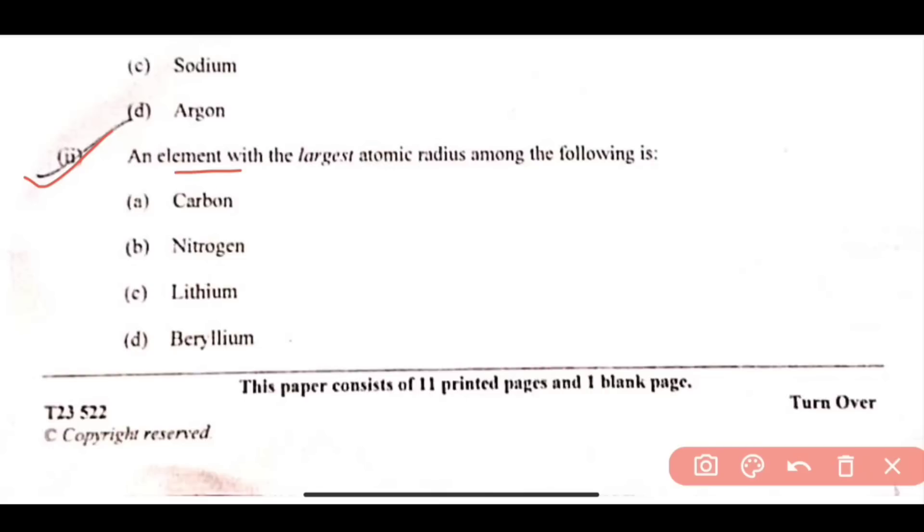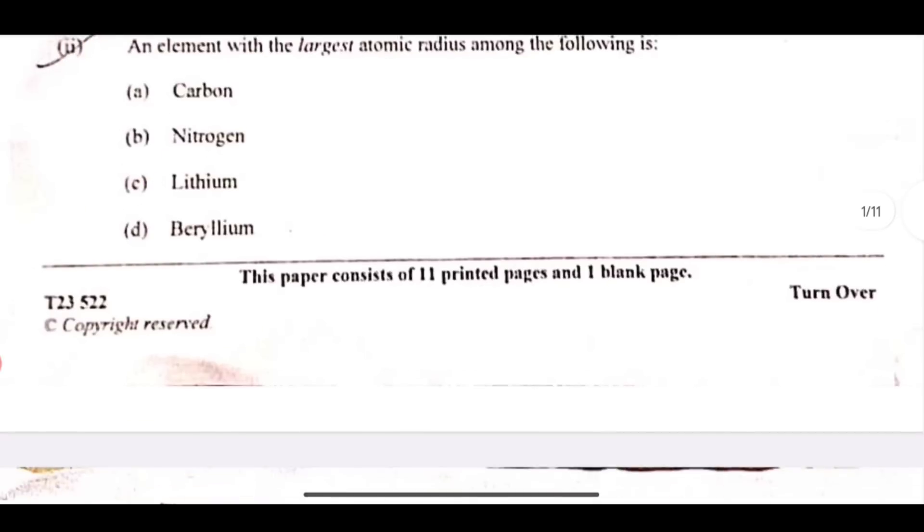Next is here, an element with the largest atomic radius among the following is, so largest atomic radius, this will be lithium. So option number C is correct. Moving ahead to the next question.